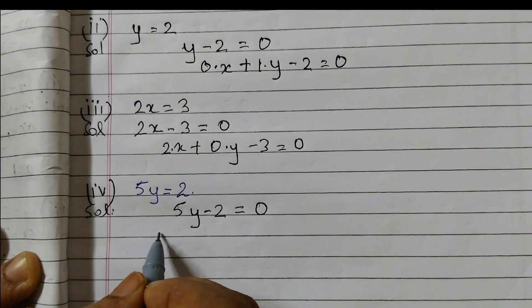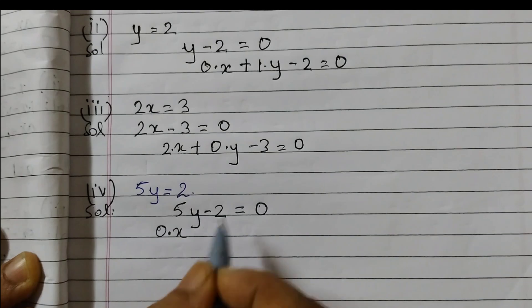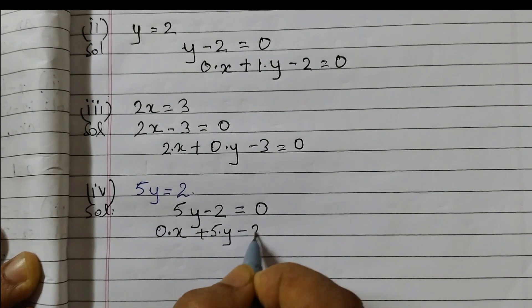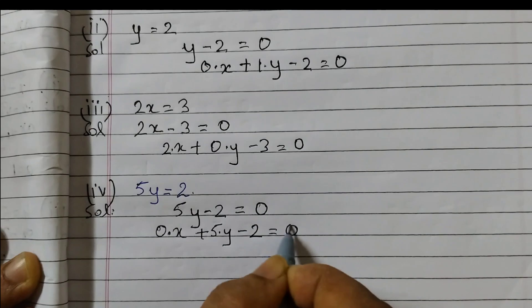Here the x term is missing so we will write 0 into x plus 5 into y minus 2 is equal to 0.